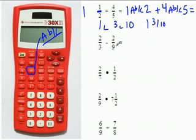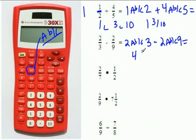Now do the same thing with 2/3 - 2/9. You go 2 A B/C 3 minus 2 fraction key 9 equals. So 2 fraction key 3 minus 2 fraction key 9 equals. On your calculator, you should get 4/9.